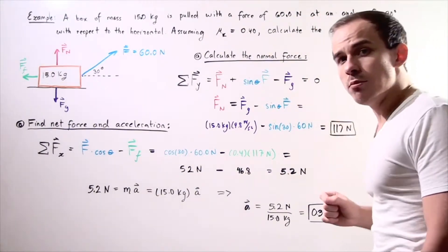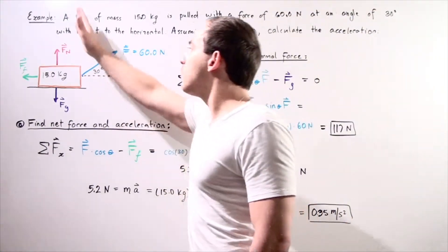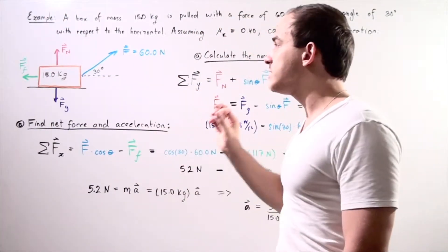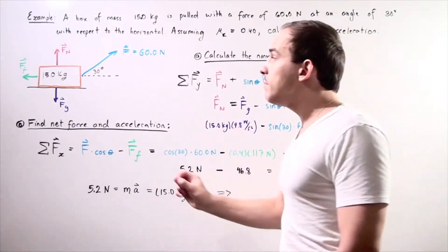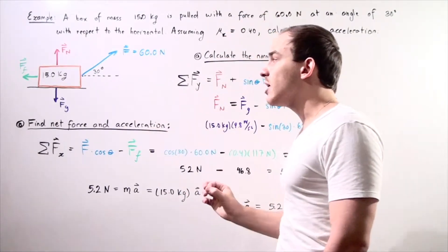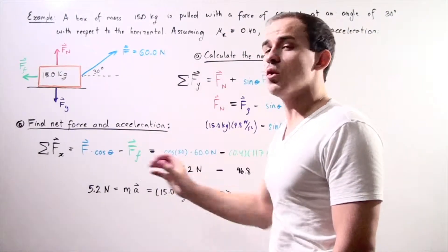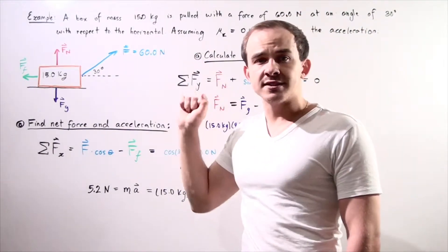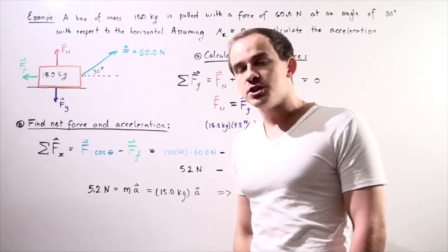To calculate the normal force, we have to sum up all the forces along the y axis and set that equal to 0. Why 0? Because our box is not accelerating, it's not moving along the y axis.